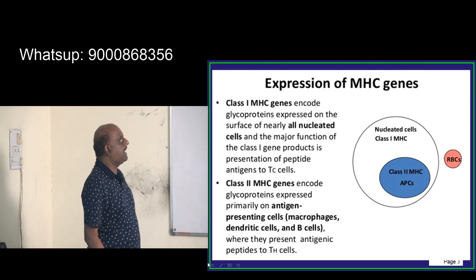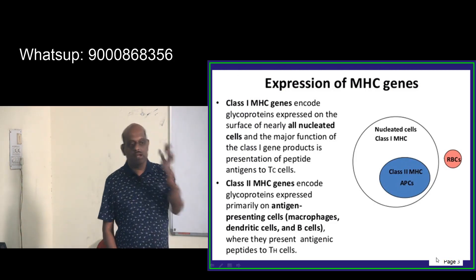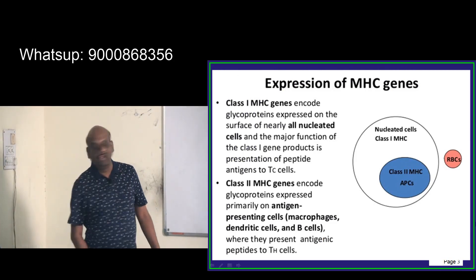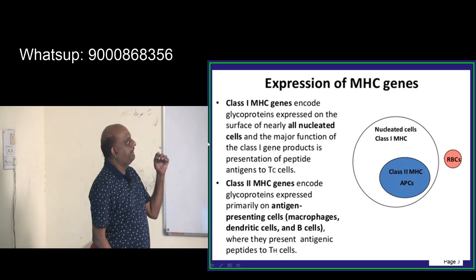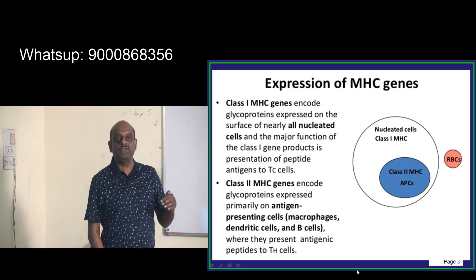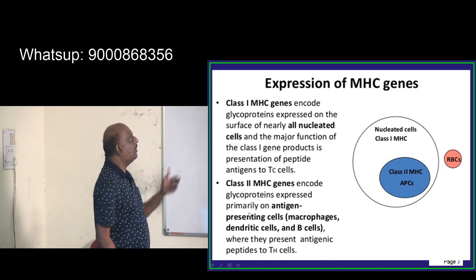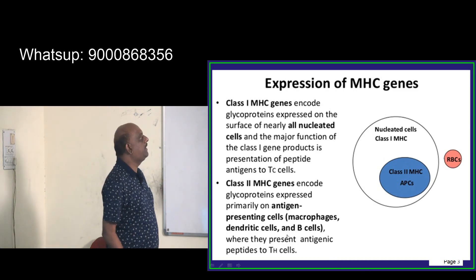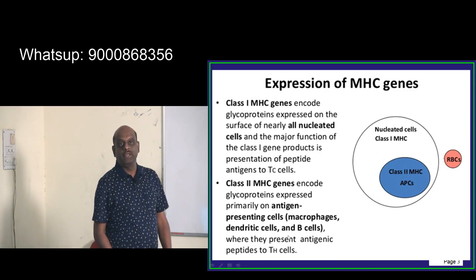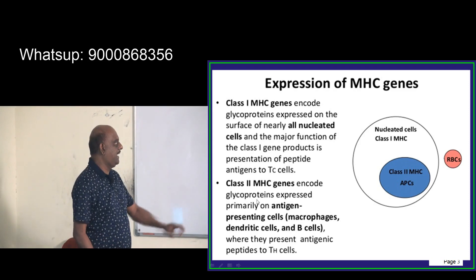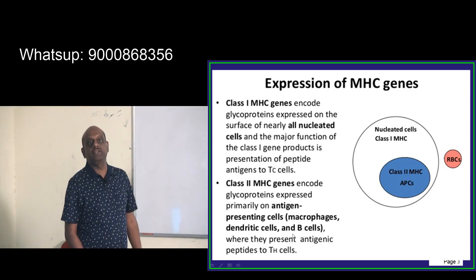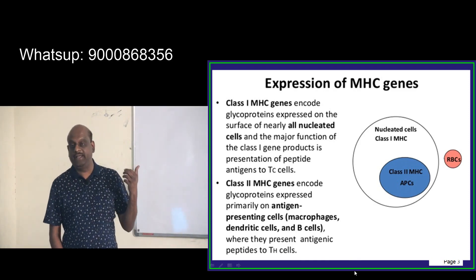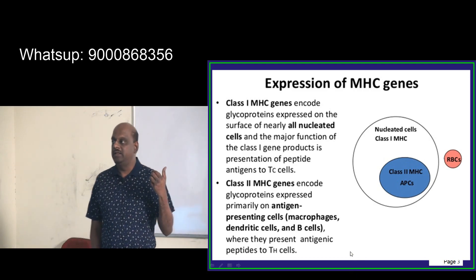When it comes to MHC, we have class 1 MHC and class 2 MHC. Class 1 MHC is expressed on nearly all nucleated cells — that is what you need to remember. Class 2 MHC is present on antigen presenting cells like macrophages, dendritic cells, and B cells.